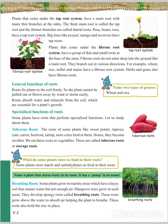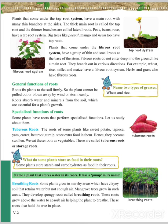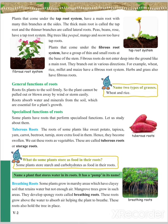For example, we can easily pull a wheat plant with our hands because it has fibrous roots. On the other hand, we cannot pull a mango tree with our hands because it has a tap root system.